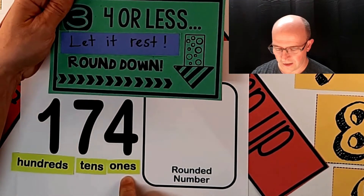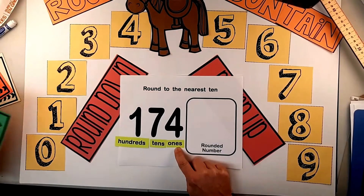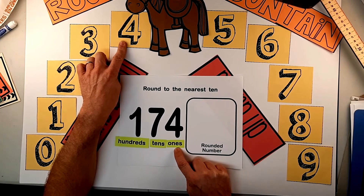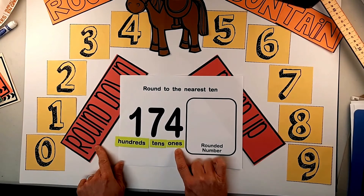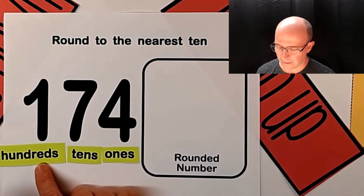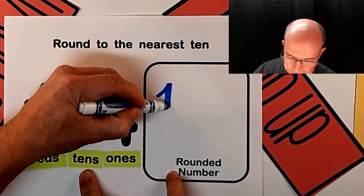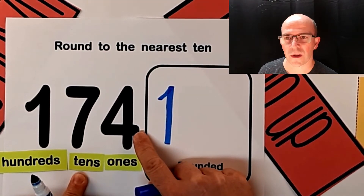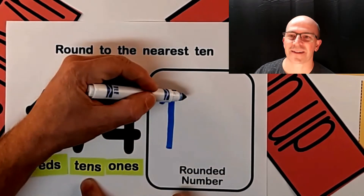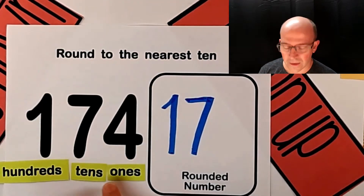Step number three says, is this four or less? Let it rest — round down. I'm just going to check with my round the mountain anchor chart, and I see that our ones column is a four. It's on this side of the mountain, and that means we round down. What will my new number look like? I keep the hundreds the same — I'll put a one here. Since this is four or less we round down, meaning my tens digit, my seven, stays the same. And this becomes a zero.